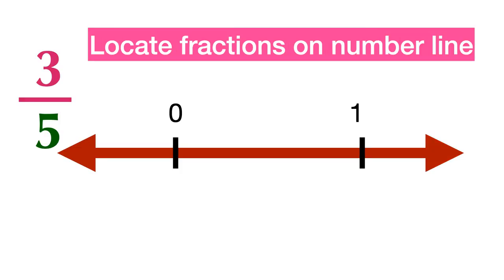Let's find the location of 3 over 5 on the number line. The denominator is 5 and the numerator is 3. 3 over 5 is a number bigger than 0 and smaller than 1.